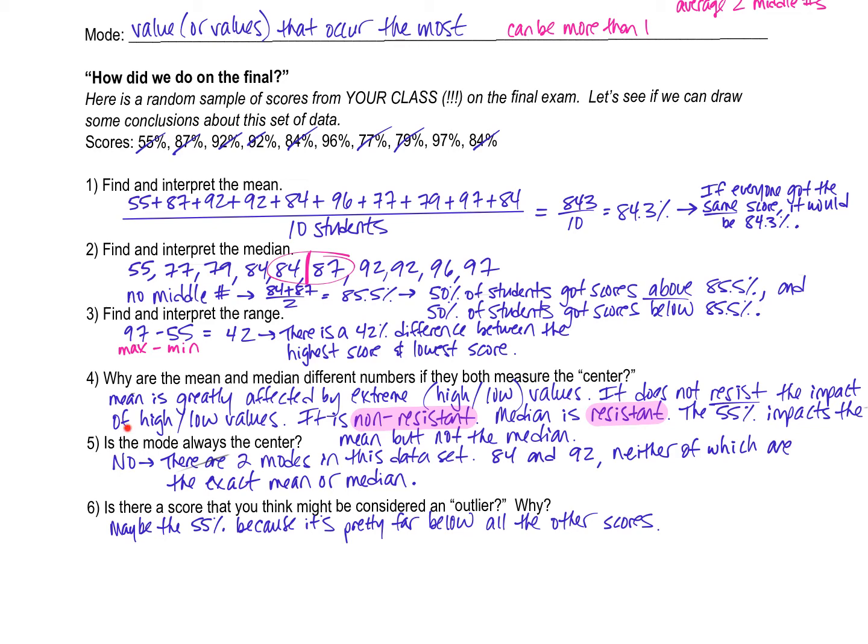Is the mode always the center? Duh. No, it's not. In this case, there are two modes in this data set. One of them is 84, which is kind of close to the mean. The other one is 92, which is higher than the mean. Neither of them are the exact mean or the median. No, the mode could have actually been my 97. Maybe I had a bunch of students get 97s on the final. Who knows?